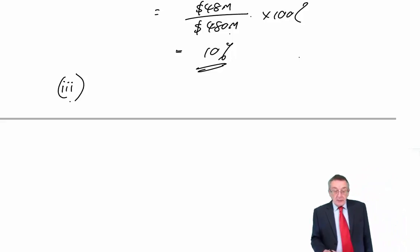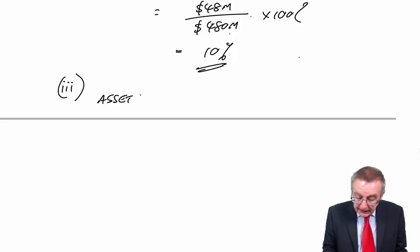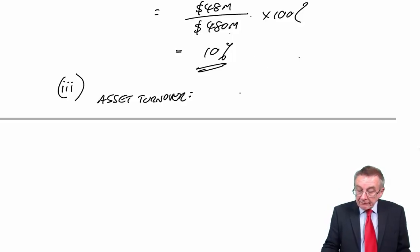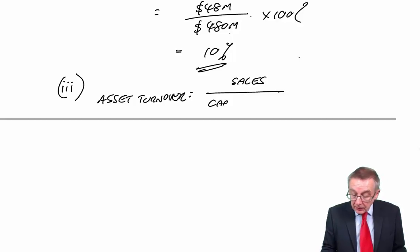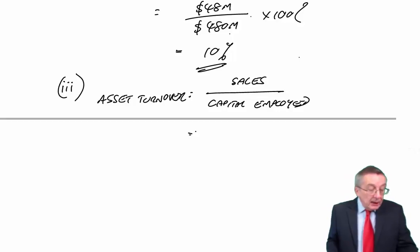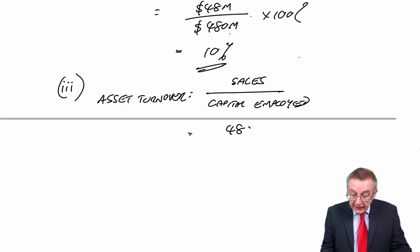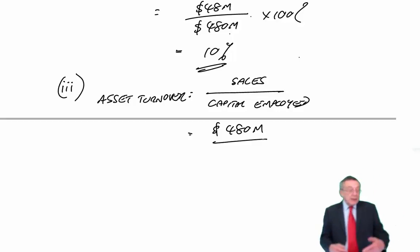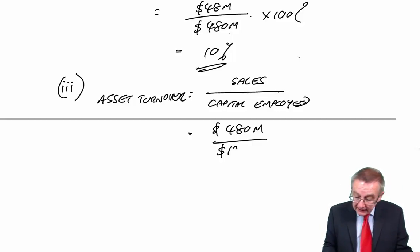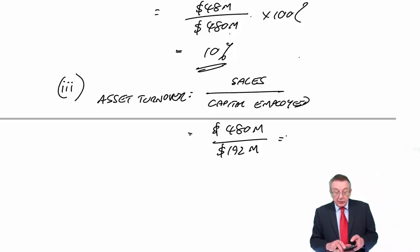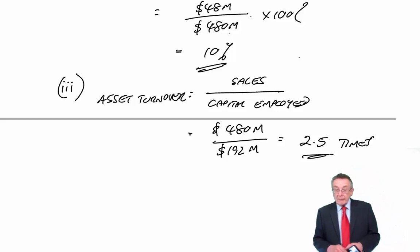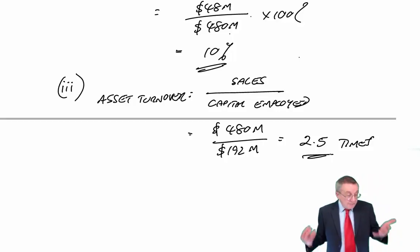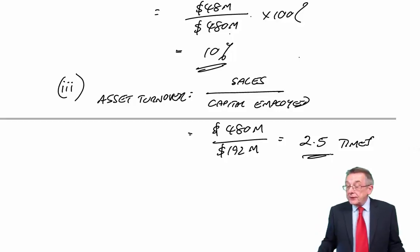Number three: asset turnover. Asset turnover is simply the total sales revenue divided by the total capital employed — the long-term capital. Here, we don't do it as a percentage; it's just a multiple. Sales revenue is 480 million — first line. The average capital employed is 192 million — third line. So we simply divide: 480 divided by 192 is 2.5 times. We're not asked to interpret them here; all it wants is the calculation.